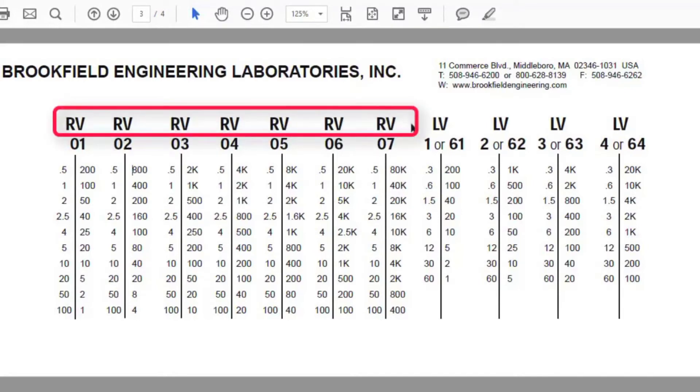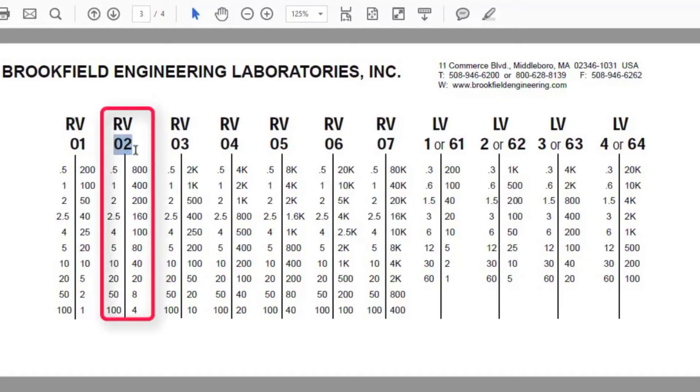Then we can select the conversion chart based on the spindle we used. In this example, a number 2 spindle was used, so the chart titled RV02 was selected.